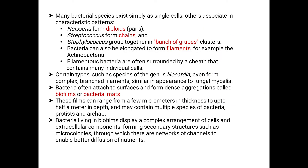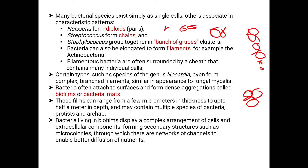Many bacterial species exist as single cells, while others associate in characteristic patterns. These include diploid (pairs), streptococcus (chain form), and staphylococcus, which group together in clusters resembling a bunch of grapes.